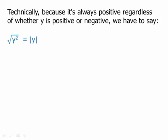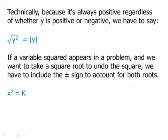If y is positive, we get a positive output. If y is 0, we get 0. If y is negative, we get a positive output. If a variable squared appears in a problem and we want to take the square root to undo the square, we always have to include the plus and minus sign, because we are the ones taking the square root — we always have to include that plus or minus sign in front of the radical.